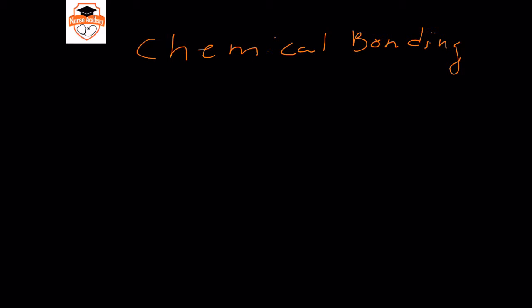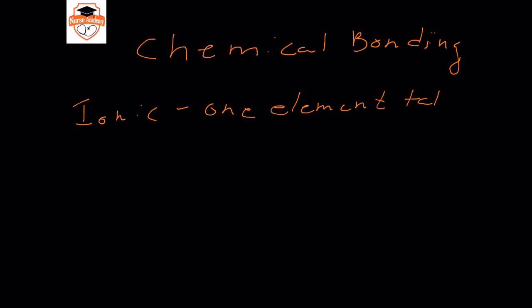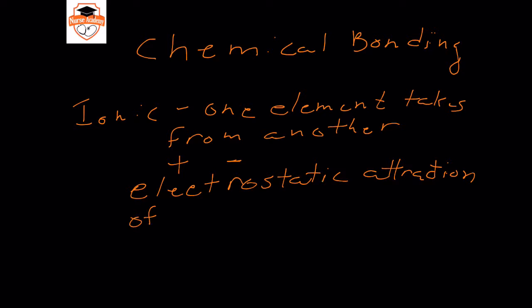There are two types of chemical bonding. The first type is ionic bonding. Ionic bonds are when one element takes electrons from another, so that you end up with a cation and an anion, and the bond is formed from the electrostatic attraction of the resultant ions.